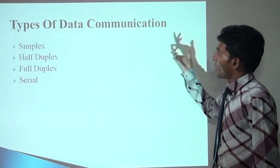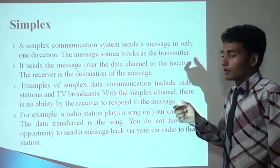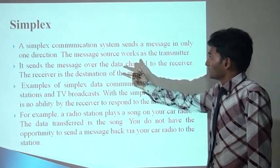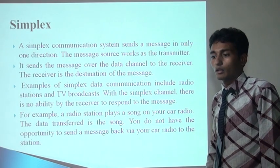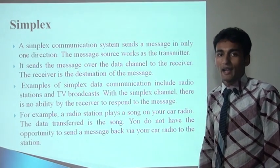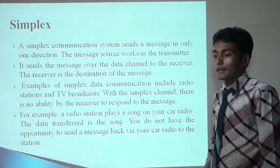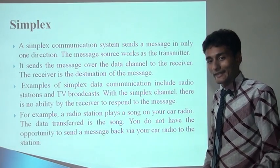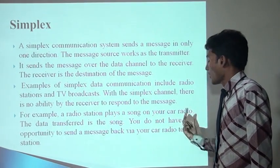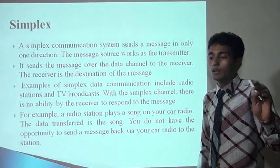There are four types of data communication: simplex, half duplex, full duplex, and serial. In a simplex communication system, we can send data only in one direction. The message source works as a transmitter — it sends the message over a data channel and the receiver can only receive the message. The receiver does not reply or provide feedback to the sender. For example, a radio station and TV broadcast station. We can only receive the signal and do not provide any feedback. A radio station plays a song — you do not have the opportunity to send data back.